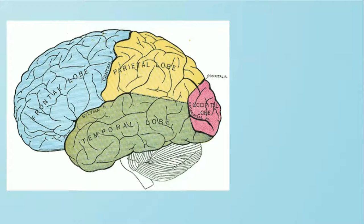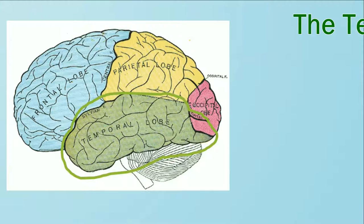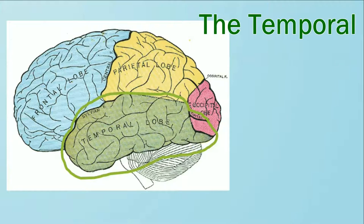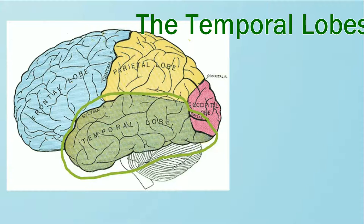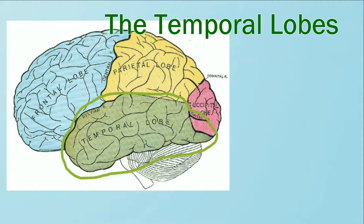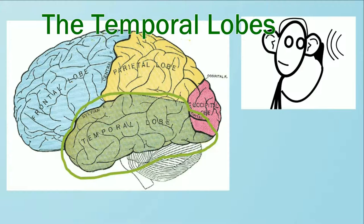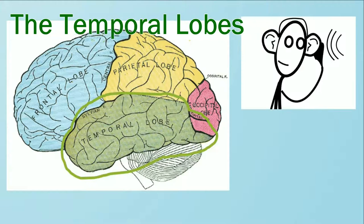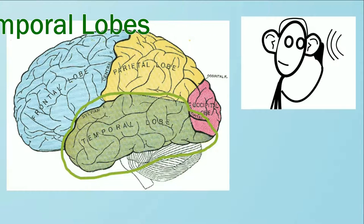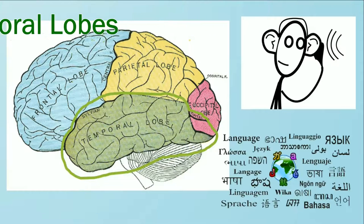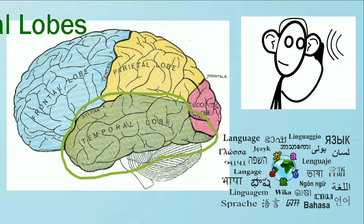Next, let's discuss the temporal lobes. The temporal lobes are behind your ears, by your temples, one on either side. The temporal lobes are responsible for lots of processes, but in general they govern auditory processing. The temporal lobes handle understanding or recognition of language, listening to and playing music, and long-term memory storage.